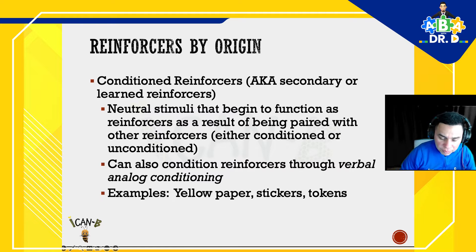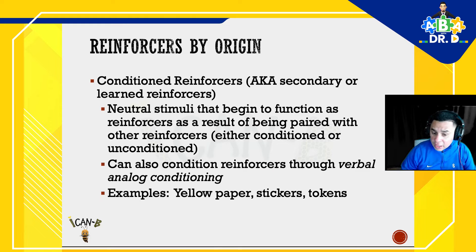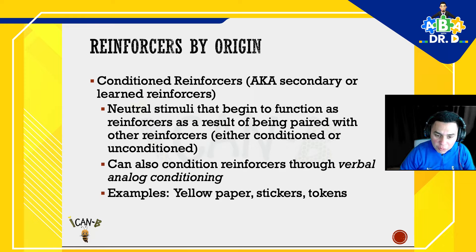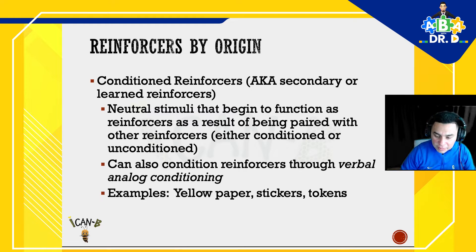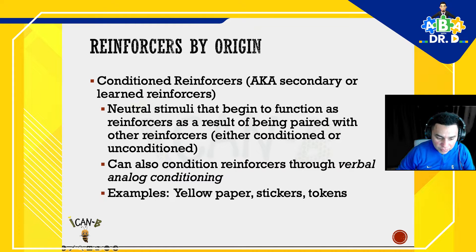The other side of the coin is conditioned reinforcers, also called secondary or learned reinforcers. Everything that relates to conditioned reinforcers starts with neutral stimuli — something that does not have a prior history of reinforcement. How does a neutral stimulus become a reinforcer? Through a process of pairing: neutral stimuli begin to function as reinforcers as a result of being paired with other reinforcers, either conditioned or unconditioned, and can also be conditioned through verbal analog conditioning. Examples include yellow paper, stickers, and — for those who work in autism — token economies, which are a very common type of conditioned reinforcer.